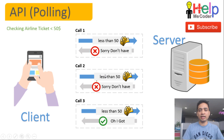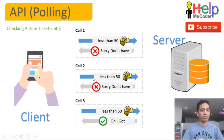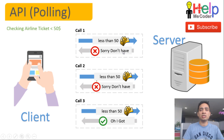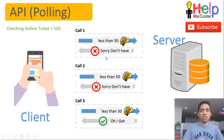I come back another day and again check for a ticket less than $50. On day two, the server replies back — no, we don't have a ticket which is less than $50. I tried it again on the third day, which was a lucky day for me, and I requested the server: do you still have a ticket which is less than $50? And the server said yes. So this methodology where from a client you request the server and then the server replies is called a polling methodology, where you keep polling the server for the information that you request.